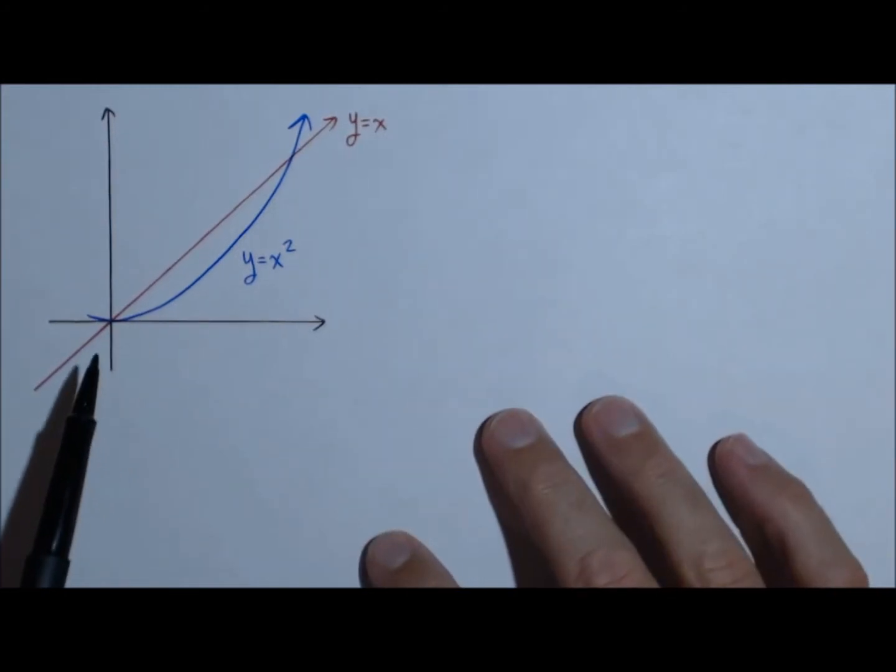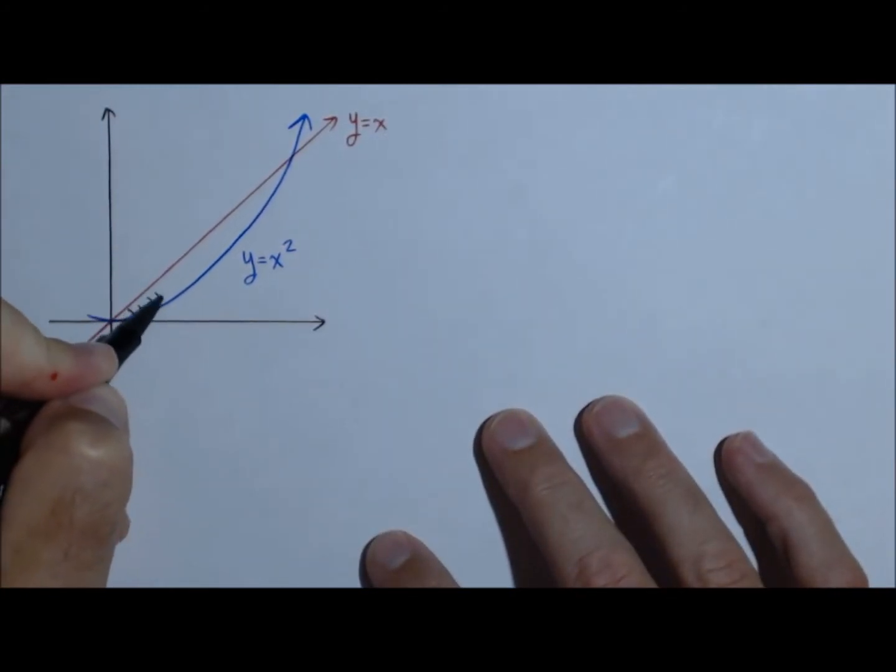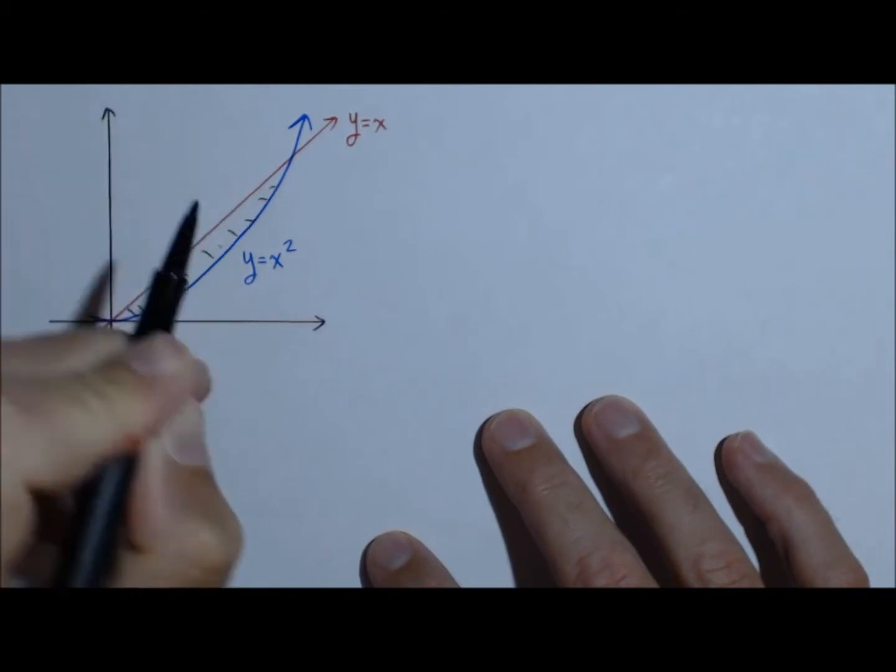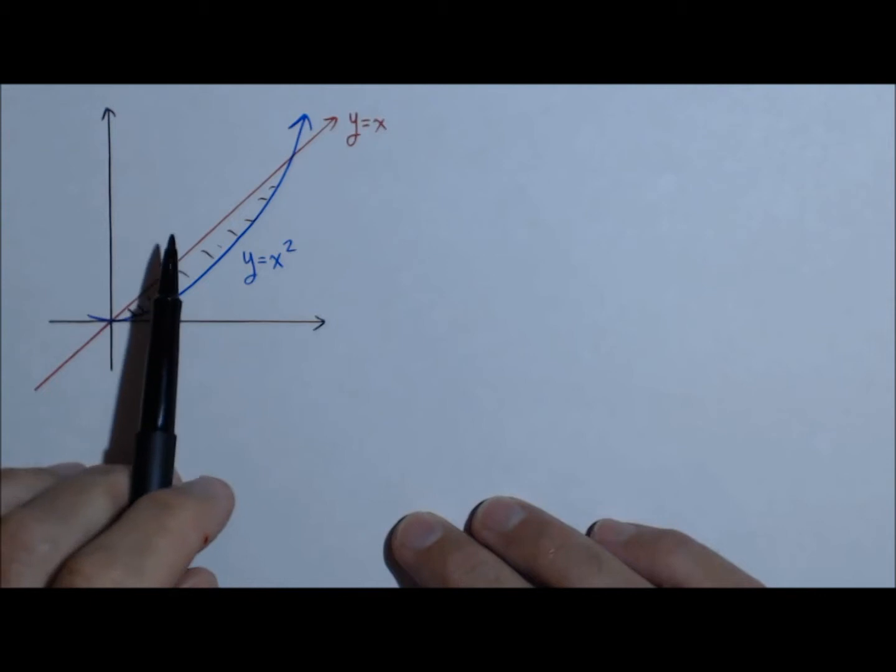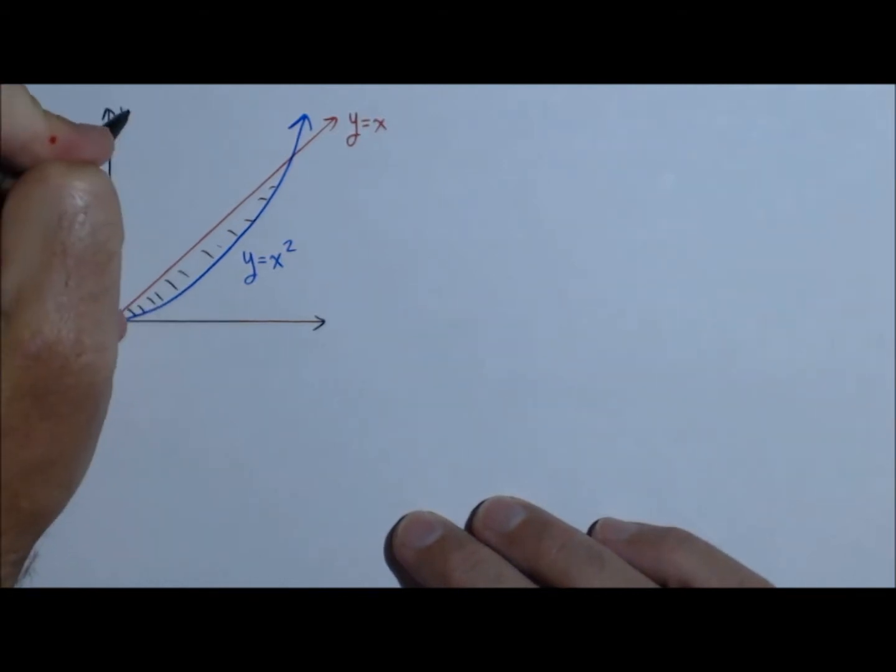In this video, we're going to talk about revolving the region between y equals x squared and x around a vertical line, and let's start with the y-axis.